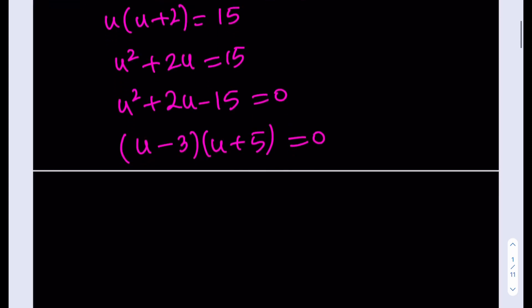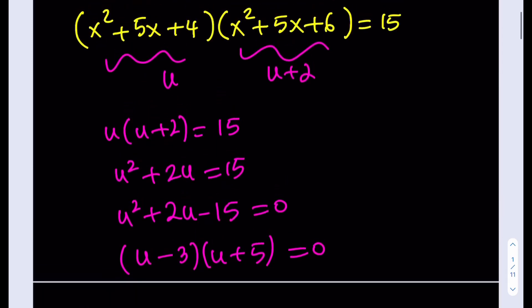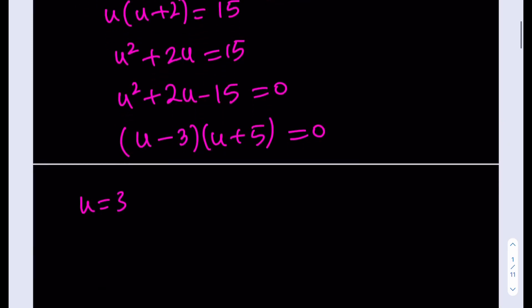And from here, we're going to be getting two solutions. One of them is going to be u = 3. And let's see what we named u. u = x² + 5x + 4. So we'll get x² + 5x + 4 = 3, which means x² + 5x + 1 = 0. And as you know,